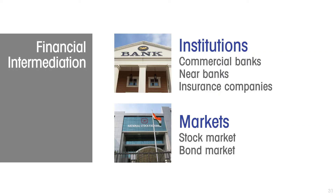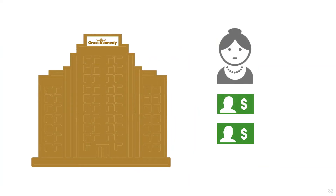A second channel is through financial markets — the stock market and the bond market. Here's how this works: let's say a big conglomerate wants to get into a new line of business and it needs funds to do so, and there are private individuals who have savings that they are willing to make available. How do those two get together without going through a bank?